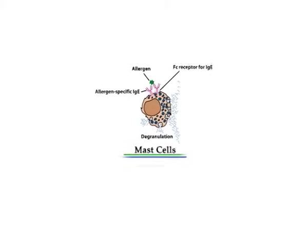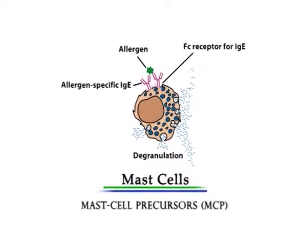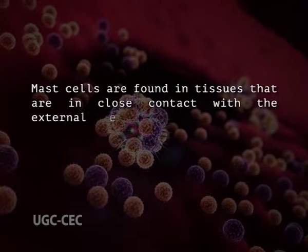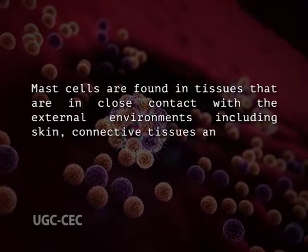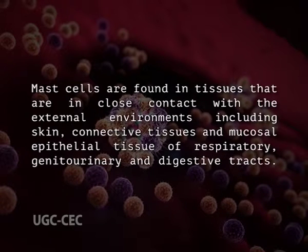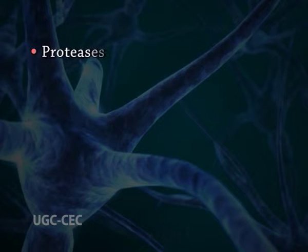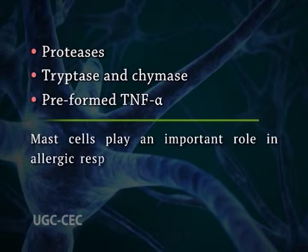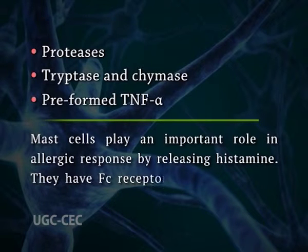Mast cells are formed in the bone marrow by hematopoiesis as mast cell precursors, or MCPs. MCPs are released into the blood as undifferentiated cells and begin differentiating after entering the tissues. Mast cells are found in tissues in close contact with extracellular environments including skin, connective tissues, and mucosal epithelial tissue of the respiratory, genitourinary, and digestive tracts. Like basophils, they have large numbers of cytoplasmic granules containing histamine and other pharmacologically active substances such as protease, tryptase, chymase, and preformed TNF-alpha. Mast cells play an important role in allergic response by releasing histamine and have Fc receptors for IgE and IgG.